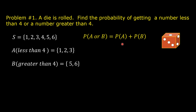The probability of event A is equal to the number of possible outcomes in event A divided by the number of all outcomes in the sample space. In event A, there are 3 possible outcomes, and in the sample space there are 6 outcomes: 1, 2, 3, 4, 5, 6.